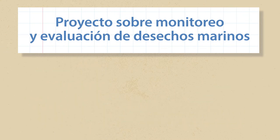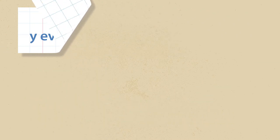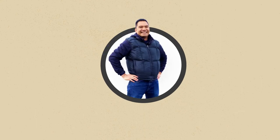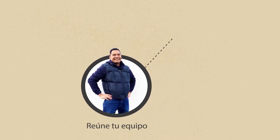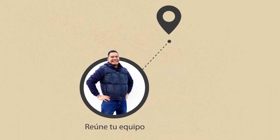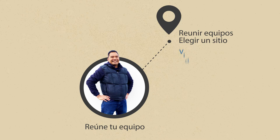Repasemos rápidamente cómo será el día de hoy de Hillary. Primero se encontrará con un amigo. Ella está emocionada de presentarle a Michael este proyecto. Trabajar con un equipo de al menos dos personas hace que el muestreo sea más divertido y rápido. Próximo, Hillary y Michael reunirán el equipo de seguridad y para el muestreo, y elegirán un sitio para muestrear.